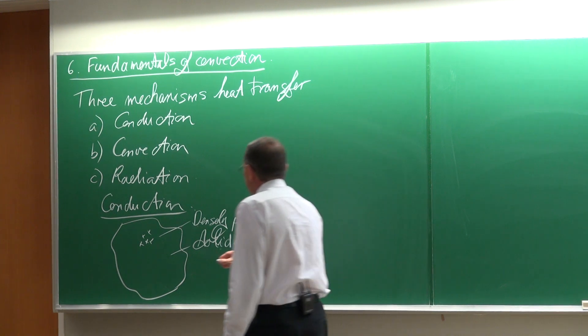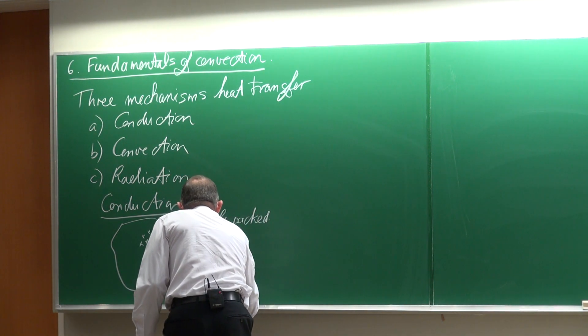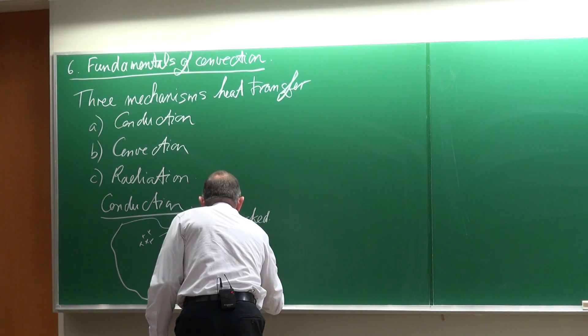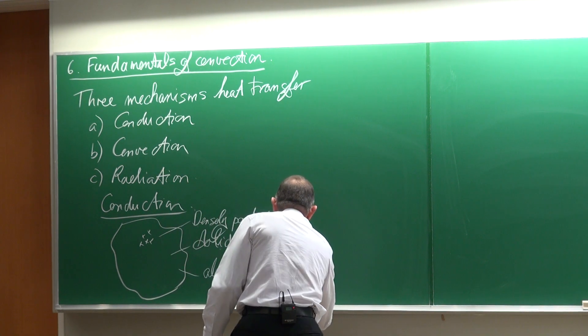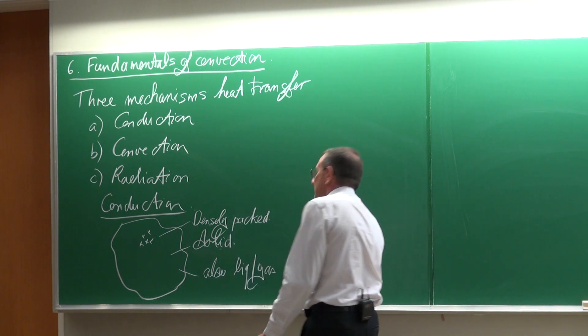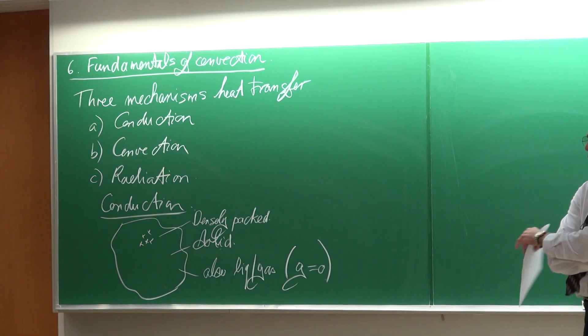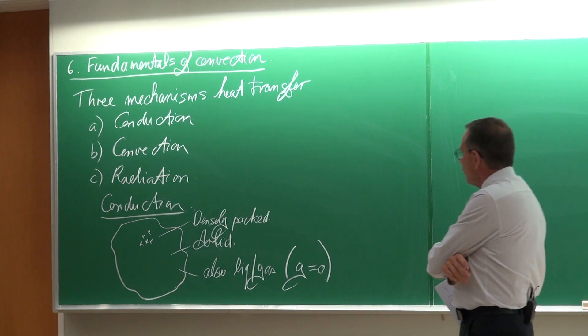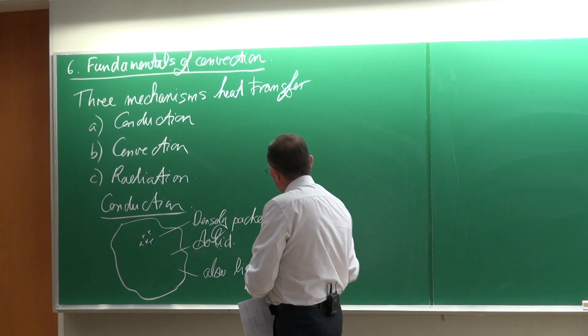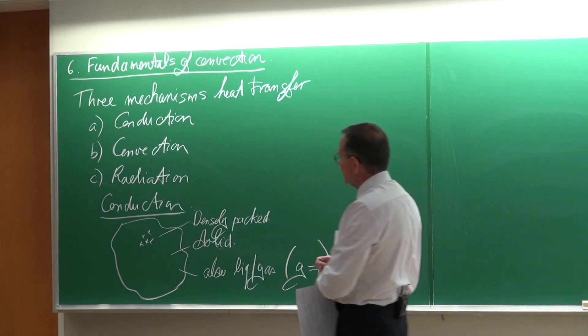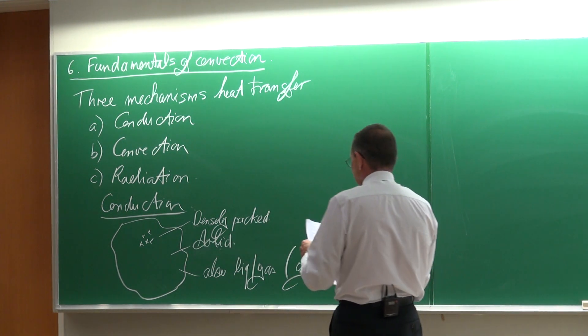Although it can also be a liquid or a gas, and typically when the gravity is equal to zero. So out of the Earth's atmosphere, where there's no gravity, then there the heat transfer can also be by conduction. It cannot be by convection.